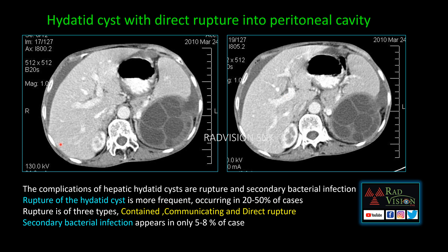In another case, you can see a hydatid cyst with multiple daughter cysts, with a breach in the wall of the hydatid cyst and expulsion of contents into the peritoneal cavity. This is a case of hydatid cyst with direct rupture into the peritoneal cavity. The complications of hydatid cysts are: rupture of the hydatid cyst and secondary bacterial infection. Rupture is either contained rupture, communicating rupture, or direct rupture.